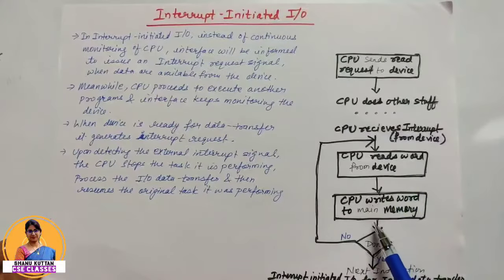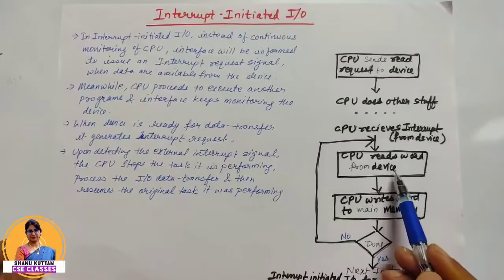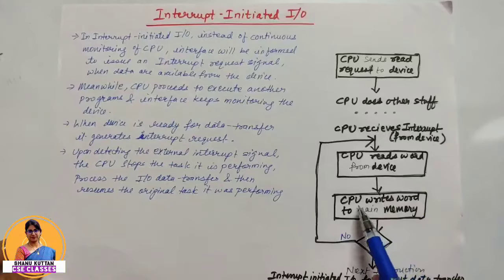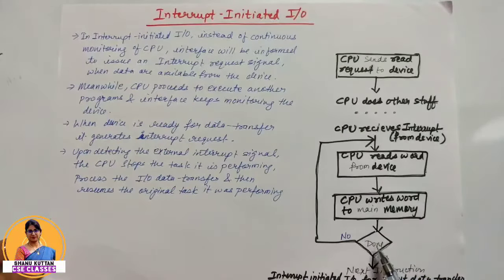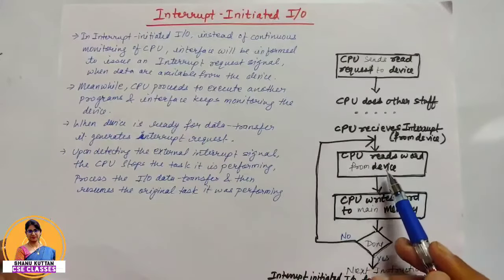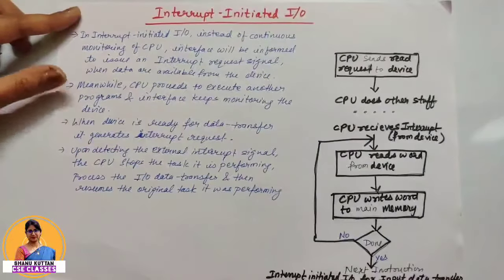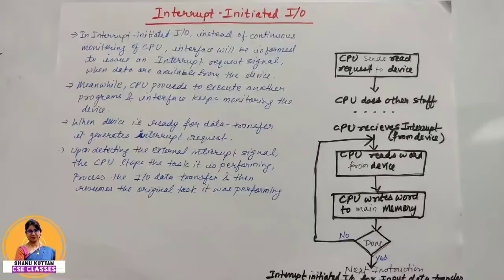The CPU reads the word from the device and writes it into the main memory. If the data transfer is complete, the CPU performs the next instruction. If data transfer is still remaining, the process continues — reading the word from the device — until the reading process is completed. This example illustrates Interrupt Initiated I/O for input data transfer.